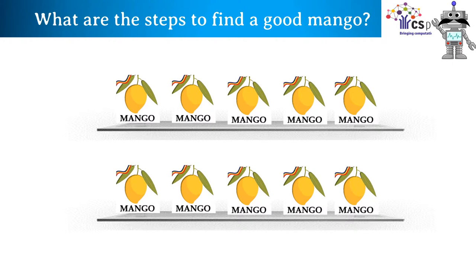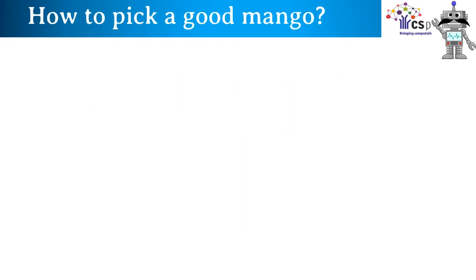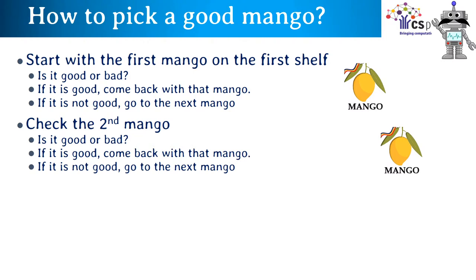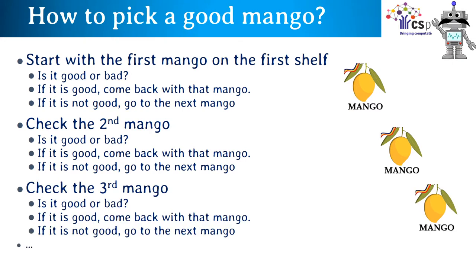At the supermarket we can see two shelves of mangoes. What do you think are the steps to find a good mango? Let's start with the first mango on the first shelf. Is it good or bad? If it is good, come back with the mango. If it is not good, go to the next mango. We repeat this check for each mango: is it good or bad? If good, come back with it; if not, go to the next mango.